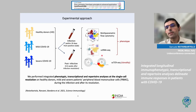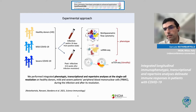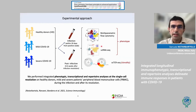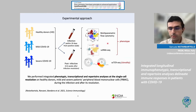From each single cell analyzed, we had matched information on the transcriptome but also on the T cell receptor sequence, which for T cells is like an identity card. Today I will focus mostly on the flow cytometry data, since this is a flow cytometry course.